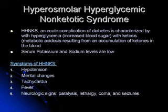Hyperosmolar hyperglycemic non-ketotic syndrome, or HHNKS, is an acute complication of diabetes. It is characterized by hyperglycemia or increased blood sugar with ketosis, which is metabolic acidosis resulting from an accumulation of ketones in the blood. Serum potassium and sodium levels are low. Symptoms of HHNKS are hypotension, mental changes, tachycardia, fever, and neurological signs such as paralysis, lethargy, coma, and seizures.